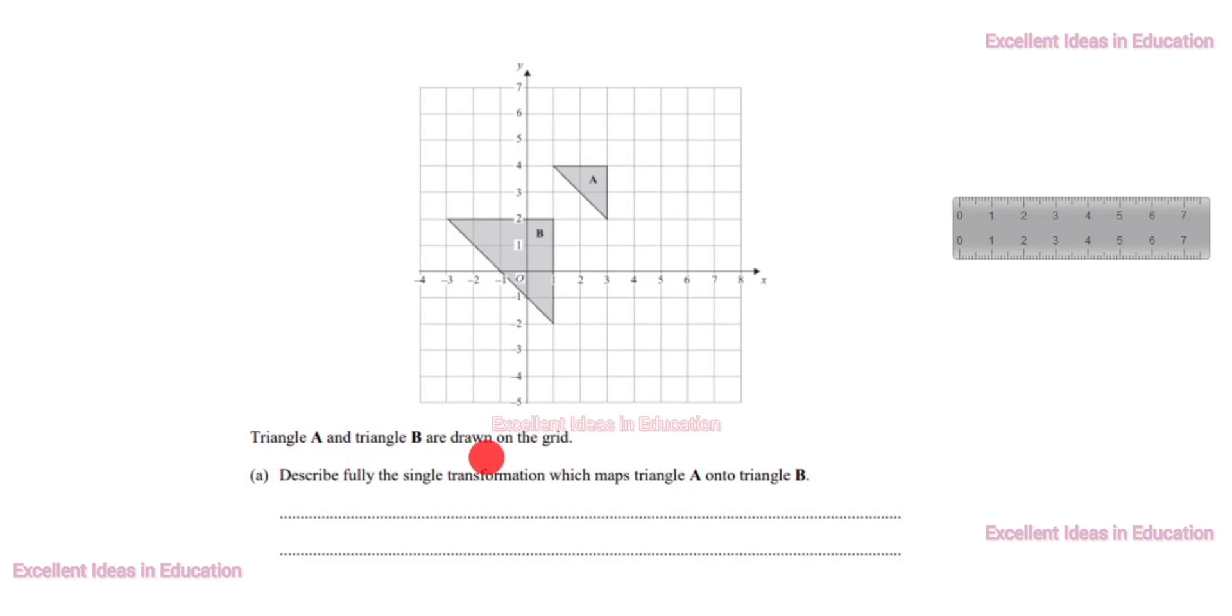Triangle A and triangle B are drawn on the grid. You see in this drawing triangle A and triangle B is given. What we need to find: describe fully the single transformation which maps triangle A onto triangle B. Single transformation. How we will find the transformation?